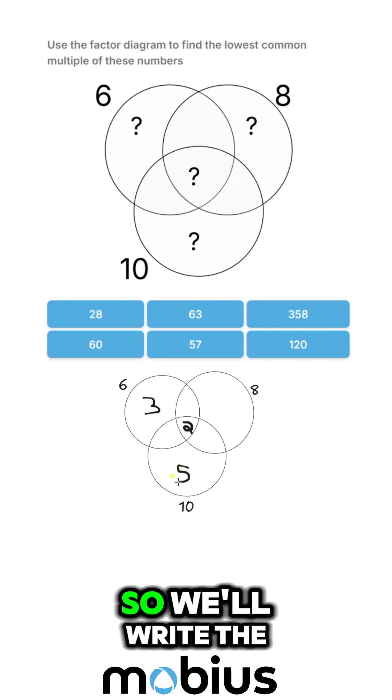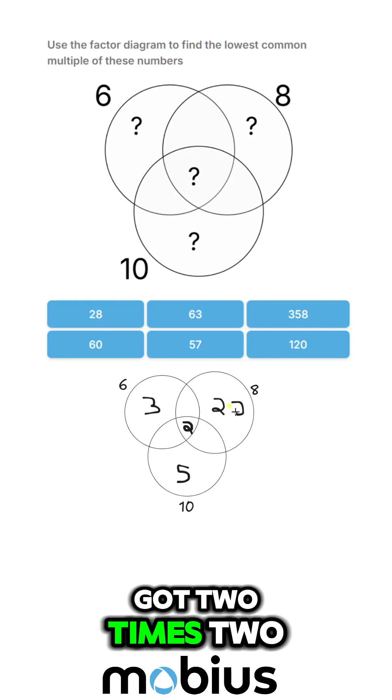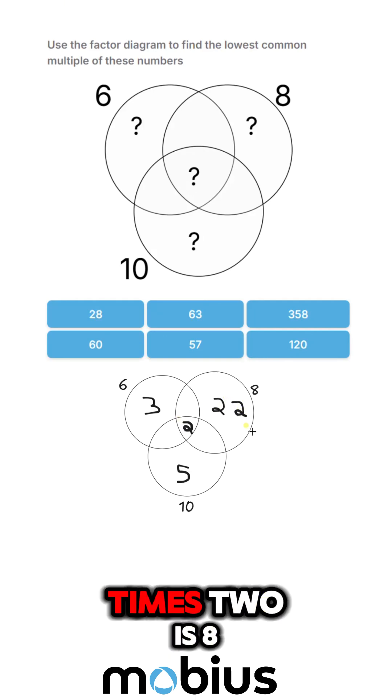And that's not shared with six or eight, so we'll write the five there. And then eight has got two times two, so two times two times two is eight.